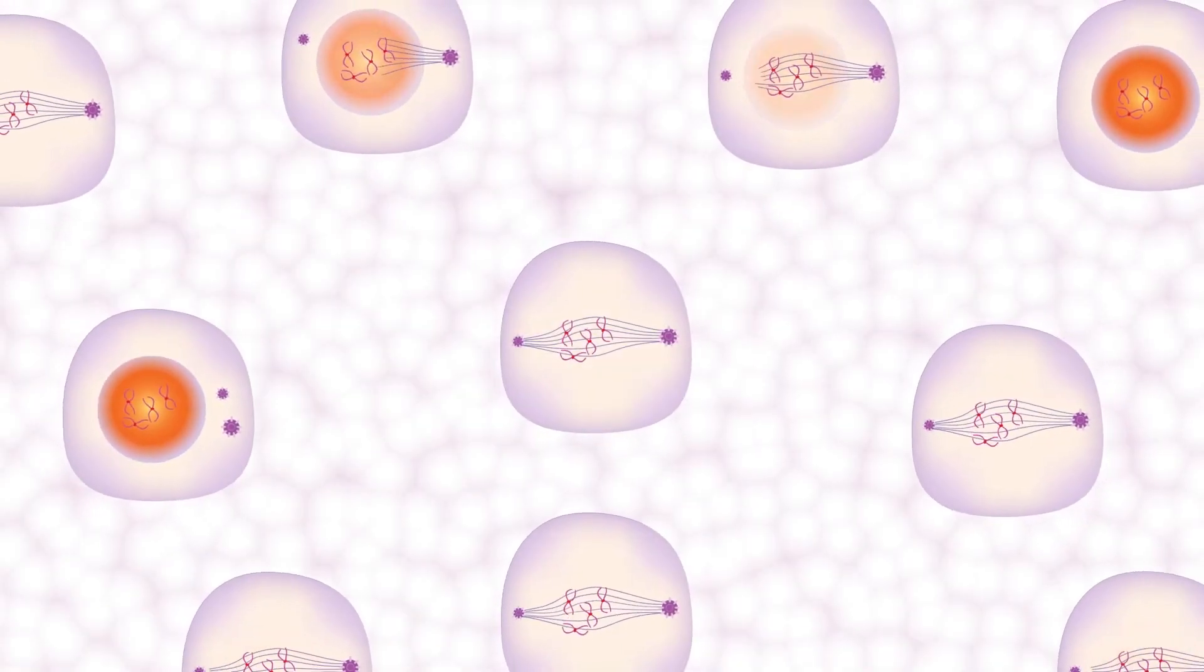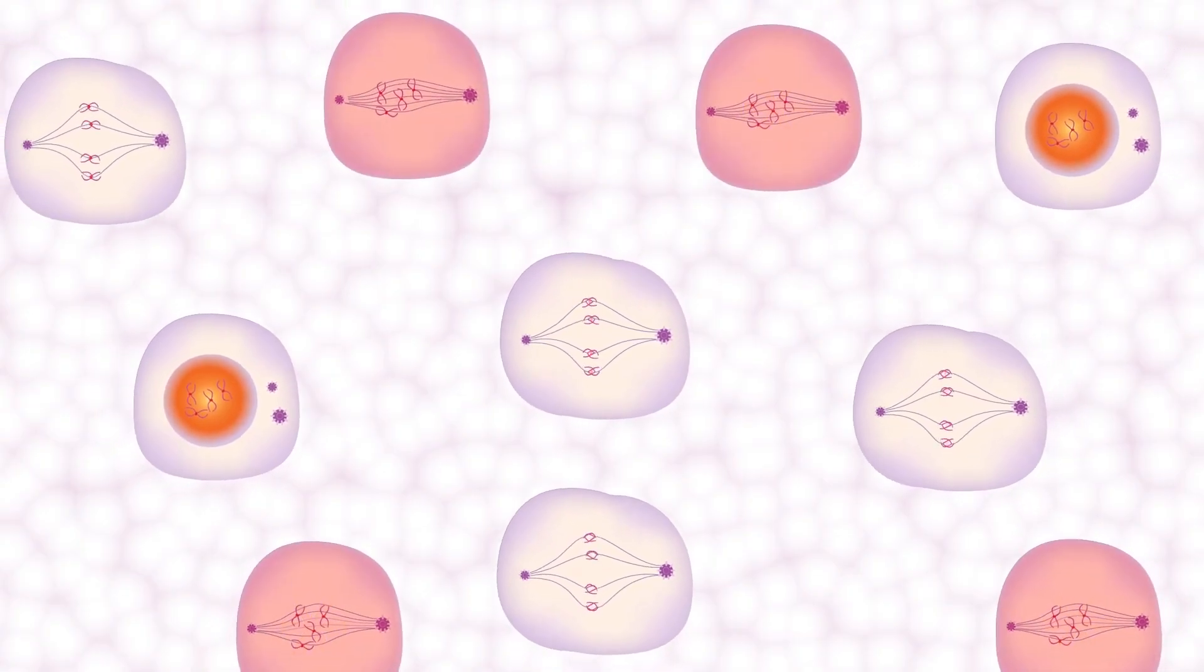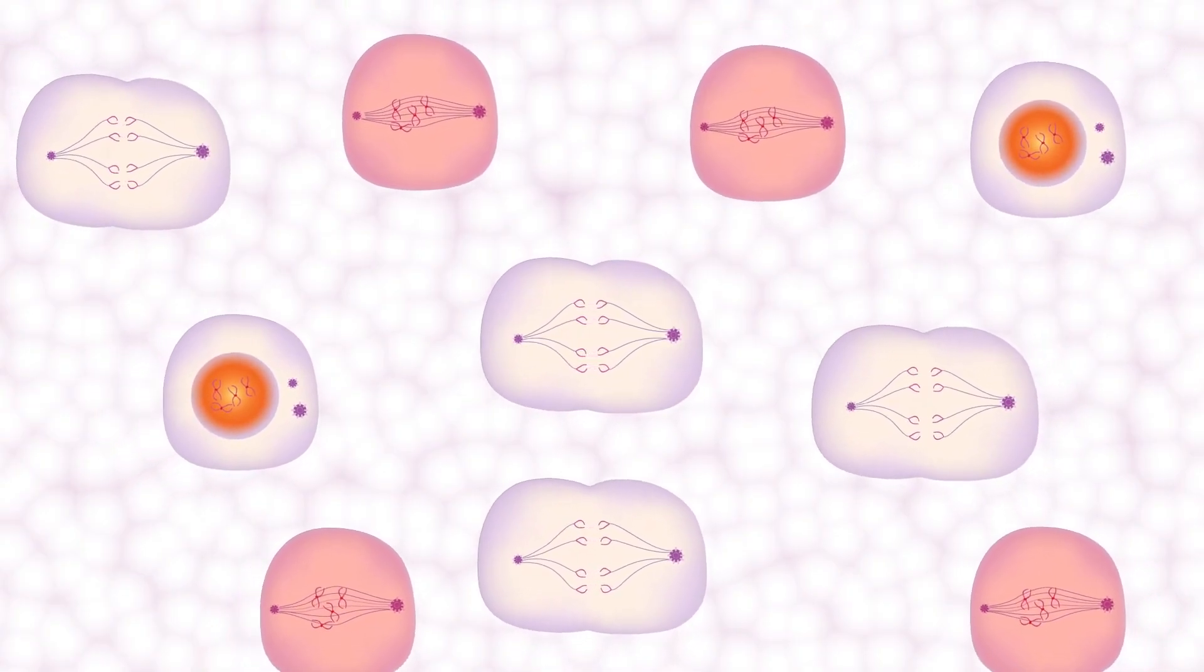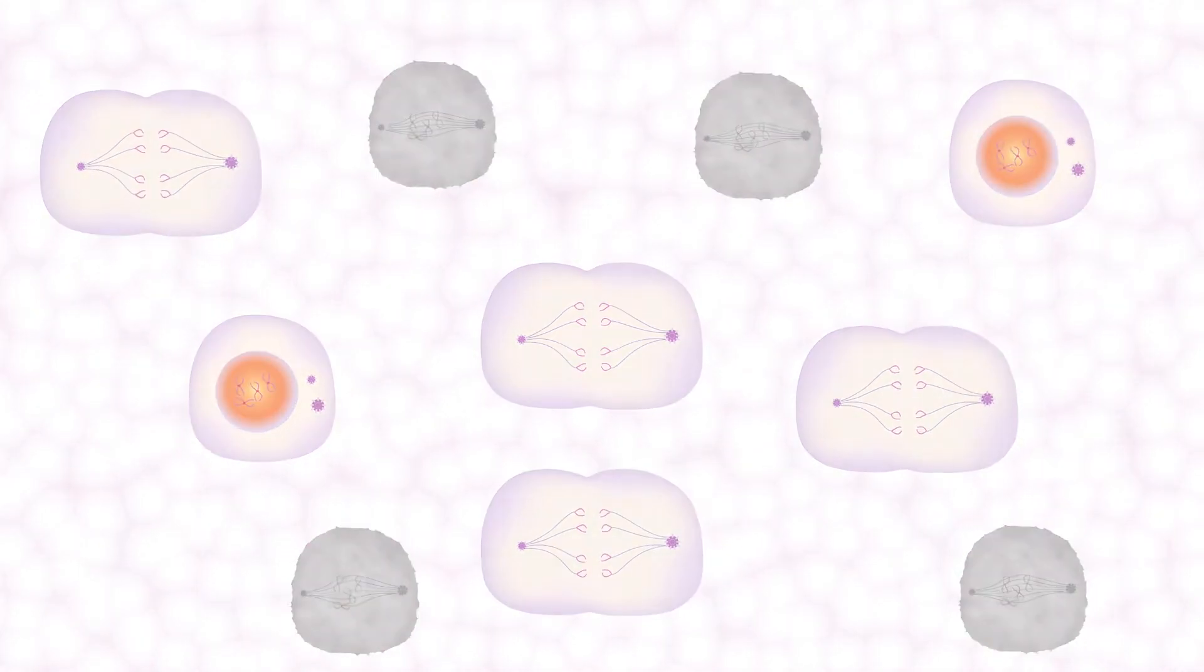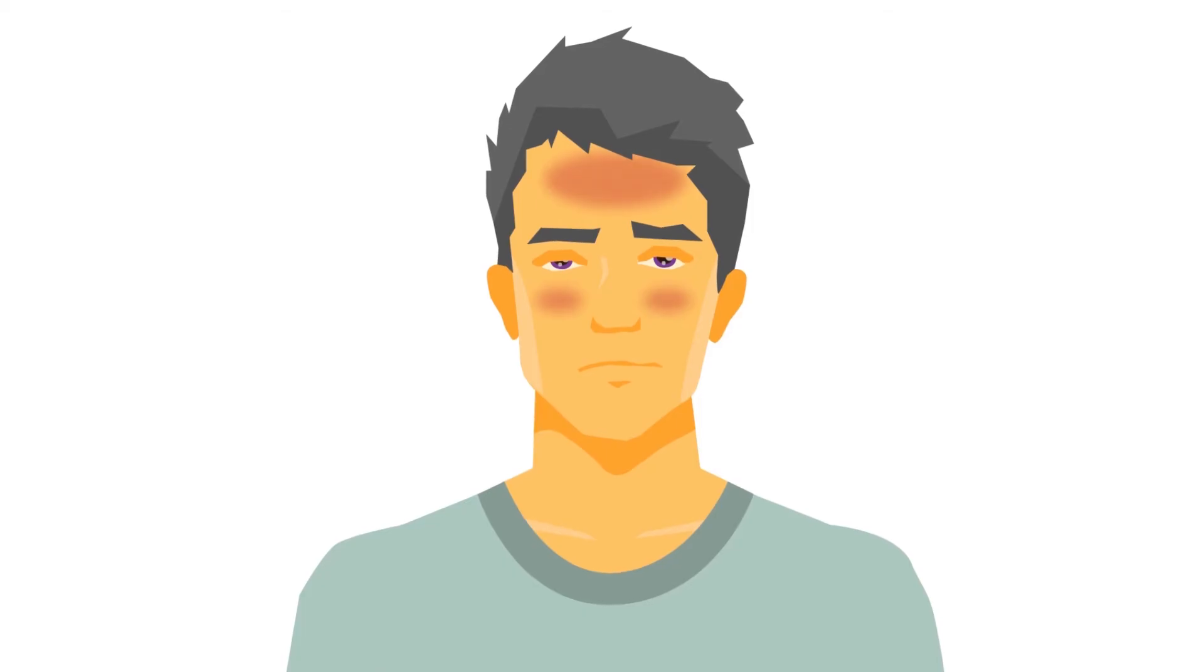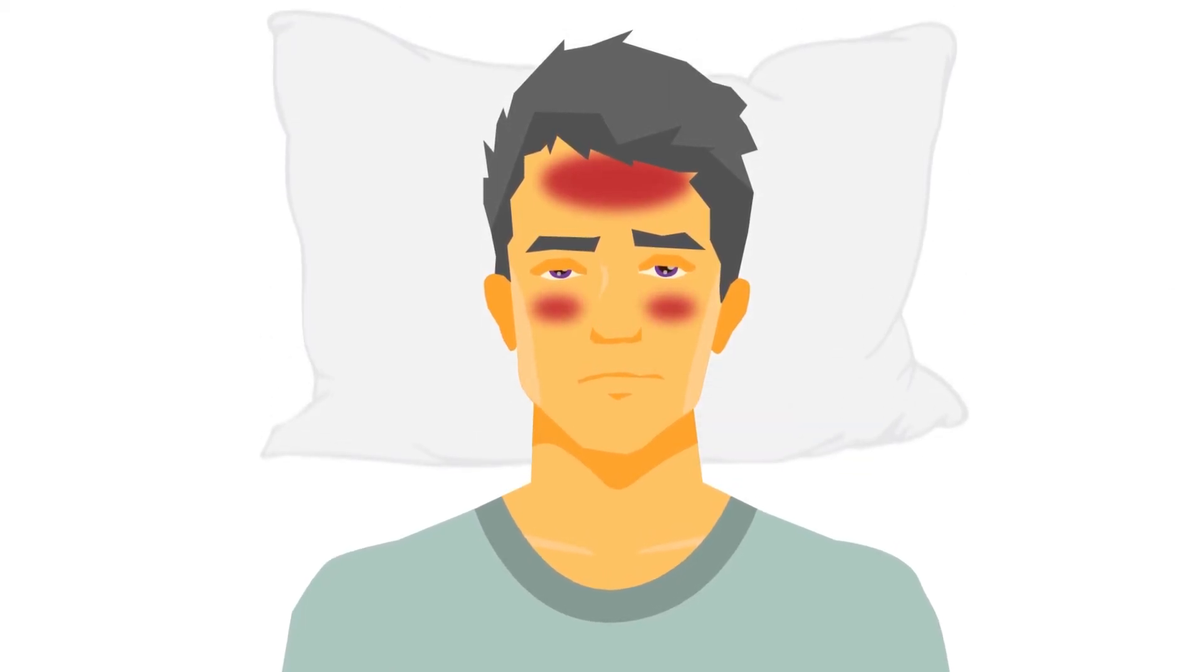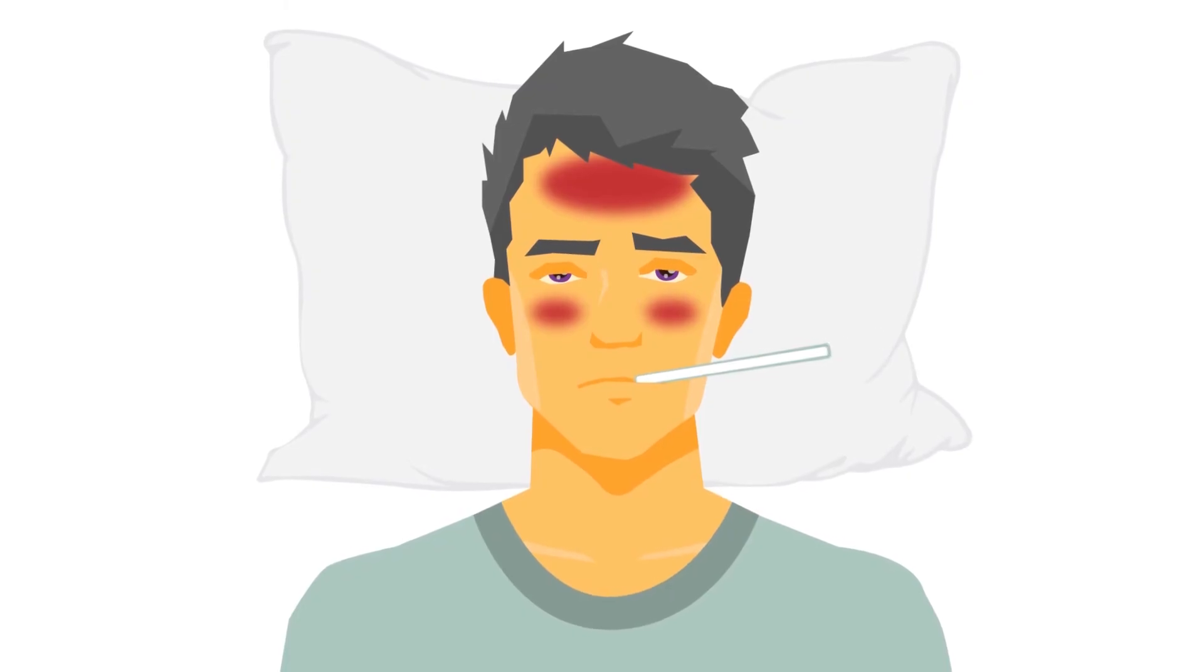The problem with many cytotoxic drugs is that they can stop normal, healthy cells dividing as well as cancer cells. This is what causes many of the side effects of chemotherapy. The cells that divide more often are the most likely to be damaged.